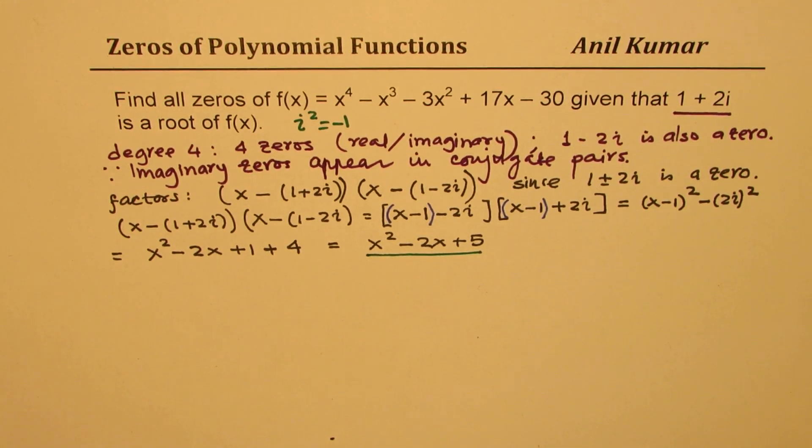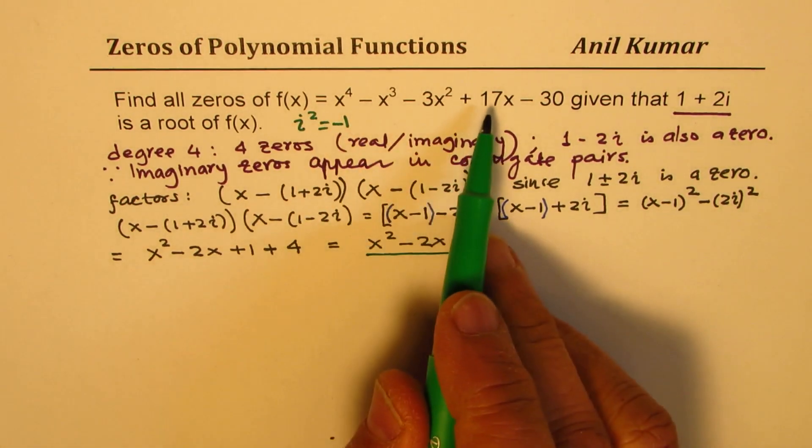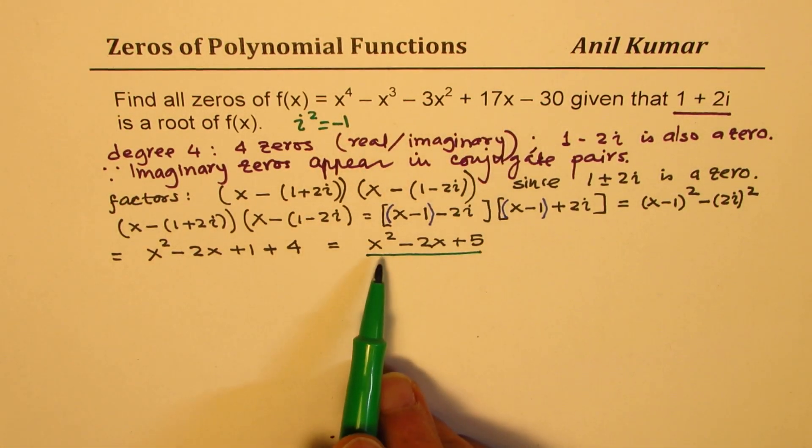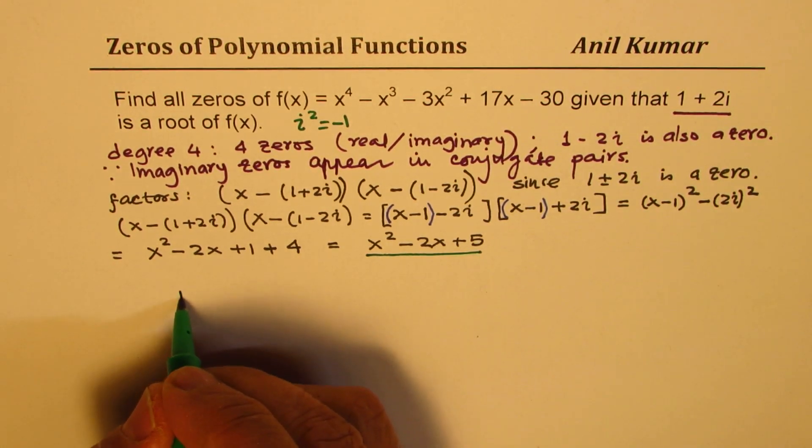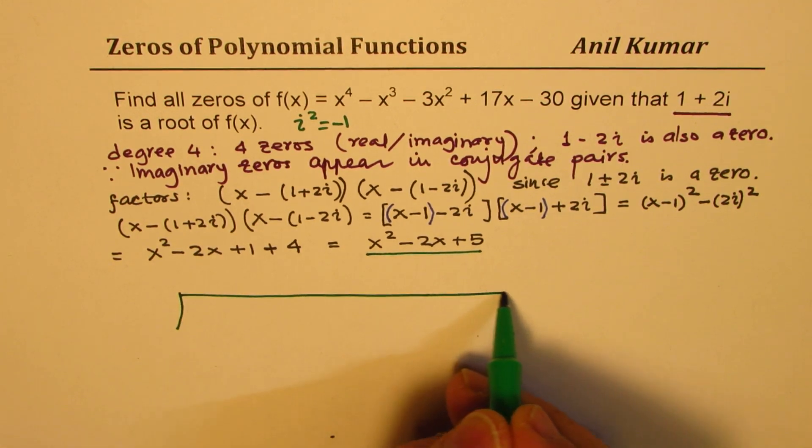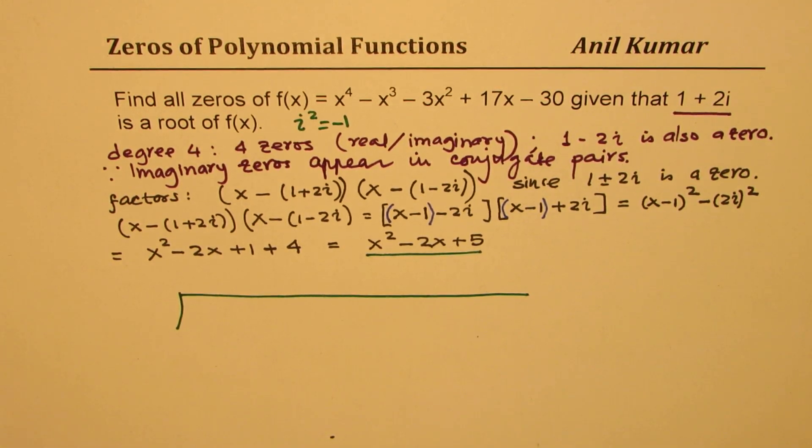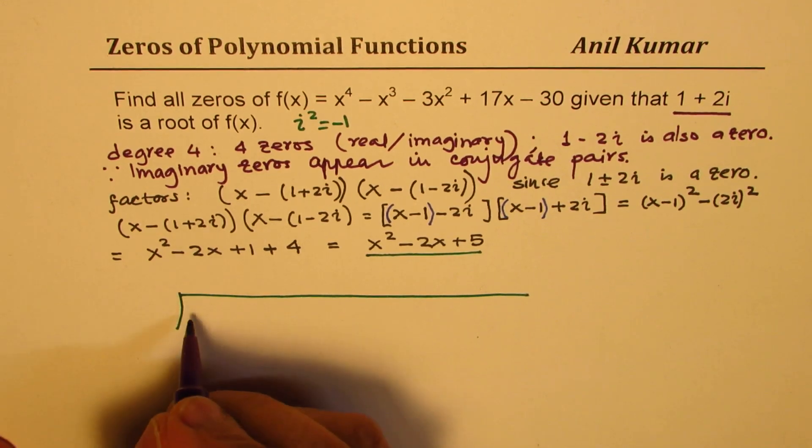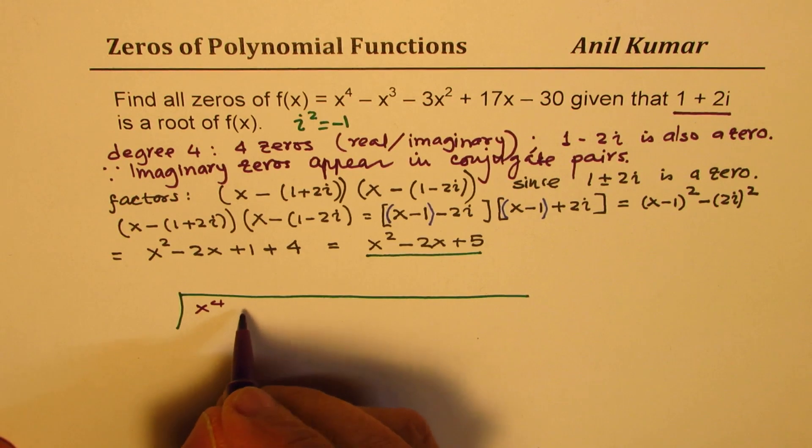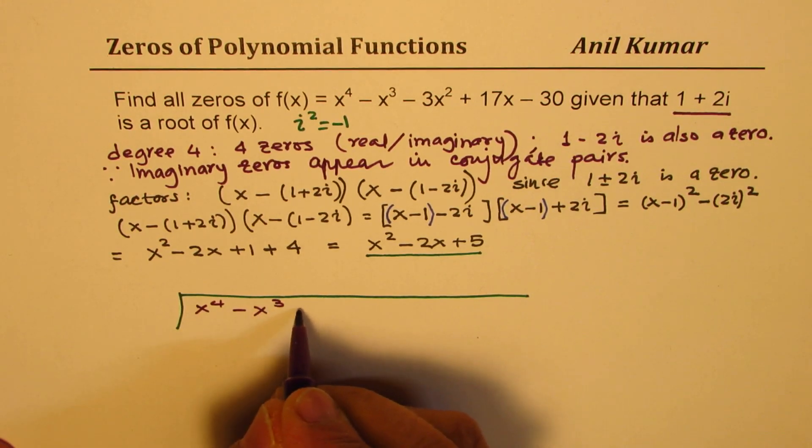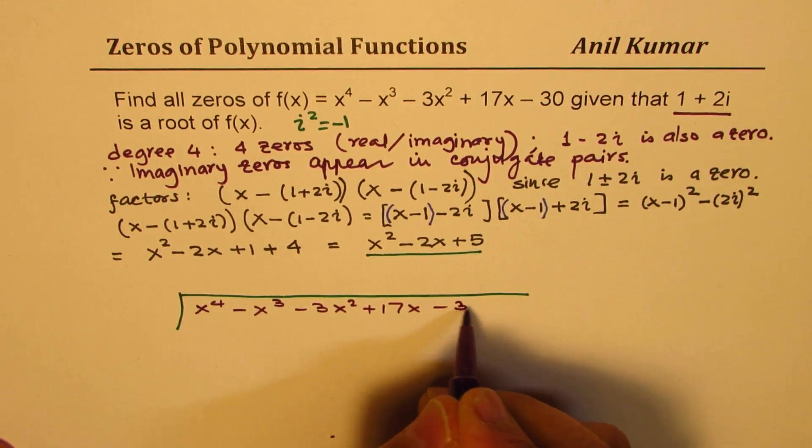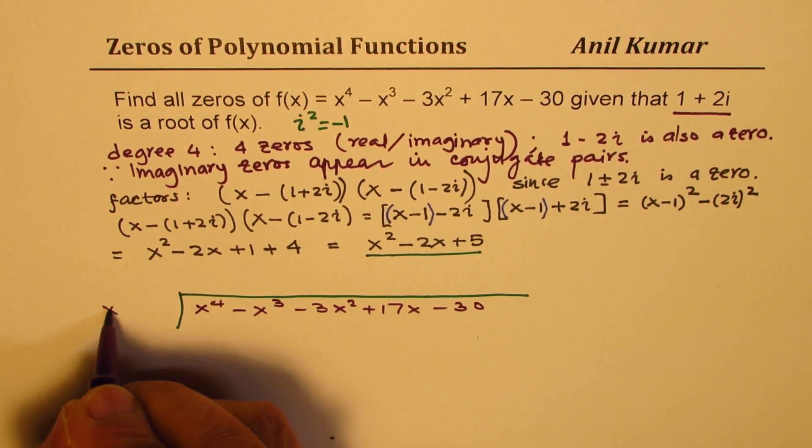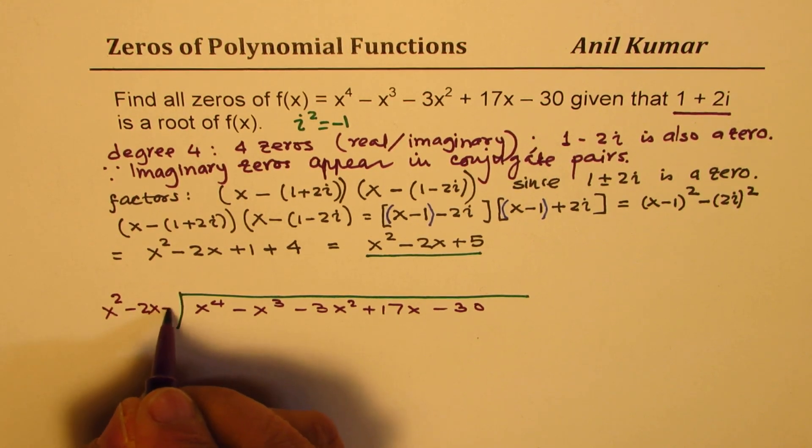Now, we can actually divide the given function by the quadratic trinomial, right? So let's do it. We have x^4 - x^3 - 3x^2 + 17x - 30, and we are going to divide this by x^2 - 2x + 5.